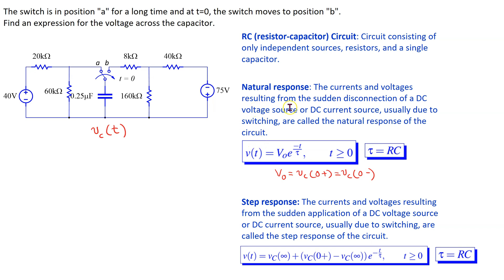Under natural response, the voltage across the capacitor has this generic form. The step response is the currents and voltages resulting from the sudden application of a DC voltage source or DC current source, usually due to switching. Under step response, the voltage across the capacitor has this generic form.